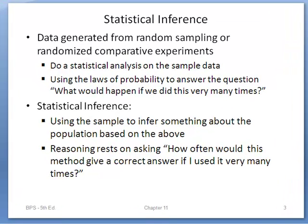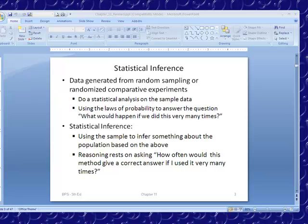Let's look at statistical inference. Data generated from random sampling or randomized comparative experiments — we do statistical analysis on the sample data, and we use the law of probability to answer questions such as: what would happen if we did this a lot of times? Statistical inference means using the sample to infer something about the population based on what we gathered from the data. The reasoning rests on asking how often would this method give the correct answer if I were to do it very many times.